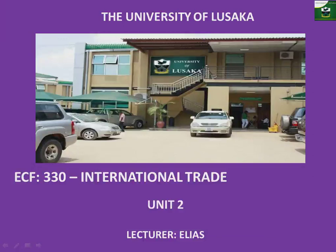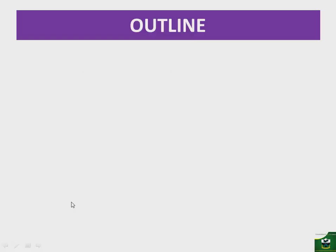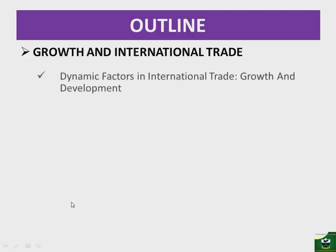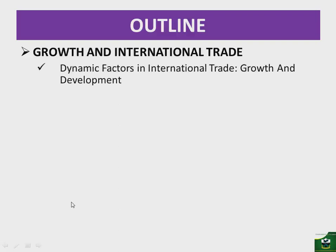Hello, welcome to unit 2 on international trade. I'm your host Elias. In this video we are going to look at the growth in international trade. What we have looked at so far is trade in the absence of growth — how nations would trade and what would form the basis for that trade. Now if we assume nations are able to increase their labor units, capital units, or resources, what would happen to the volumes of trade? Let's look at the outline.